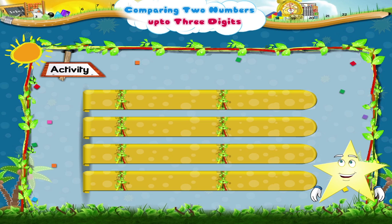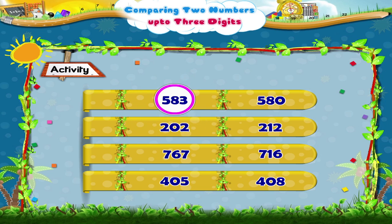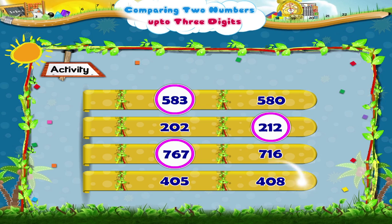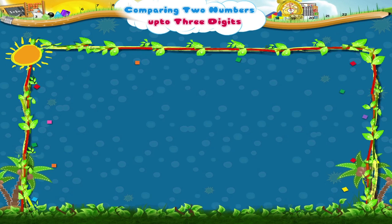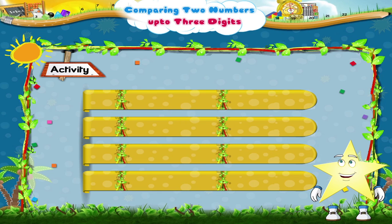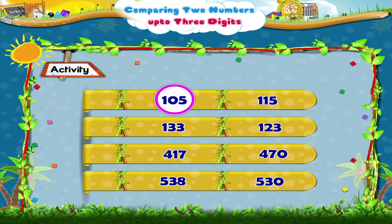Let us do an activity now. In each of the following pairs, circle the bigger number. The bigger numbers are 583, 200, and 767. Now let us do another activity. In each of the following pairs, circle the smaller number. The smaller numbers are 105, 123, and 417.